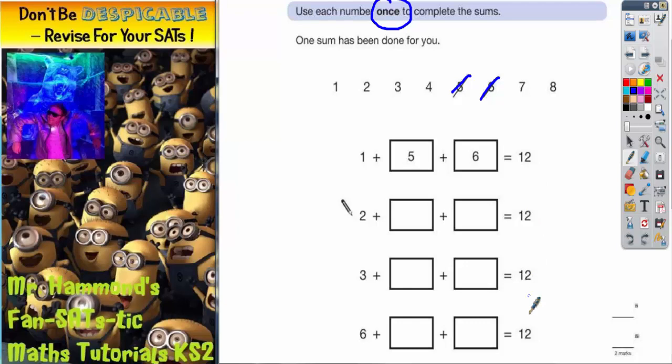So each sum we're trying to make 12, but we've already used a number in each sum. So it's a good idea to say, if we've already used a 2 on this second one, what else do we need these two to add up to to make 12? Well, the difference from 2 to 12 is 10, so those two numbers have got to make 10.